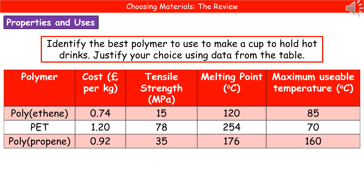Don't feel like you have to use every single property when given one of these questions — there could well be one with no relevance whatsoever. For example, if I'd given you their ability to conduct electricity, no one cares when we're talking about a cup to hold hot drinks. You're not going to be connecting it to an electrical socket, and if you are, you're probably not going to be drinking many hot drinks out of it anyway.